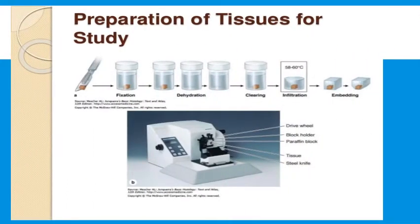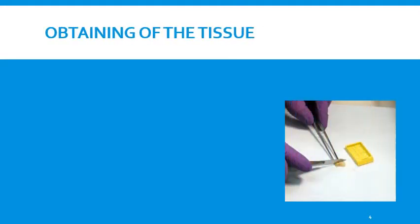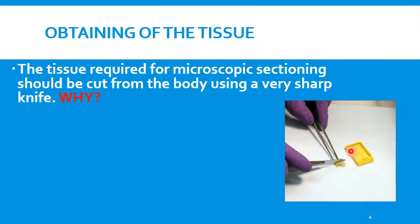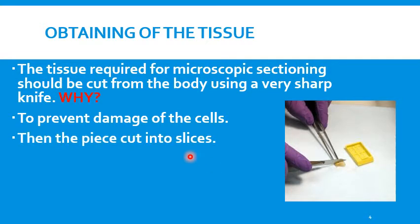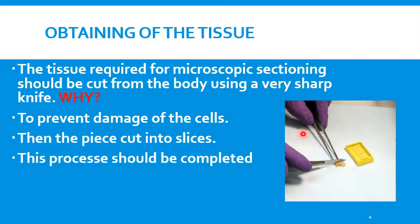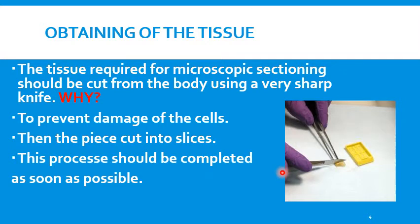To prepare microscopical sections for the light microscope, there are many steps that must be followed. The first step is obtaining of the tissue. The tissue required for microscopical sectioning should be cut from the body using a very sharp knife to prevent damage to the cells. The piece is then cut into many slices, and this process should be completed as soon as possible to also prevent damage to the cells.